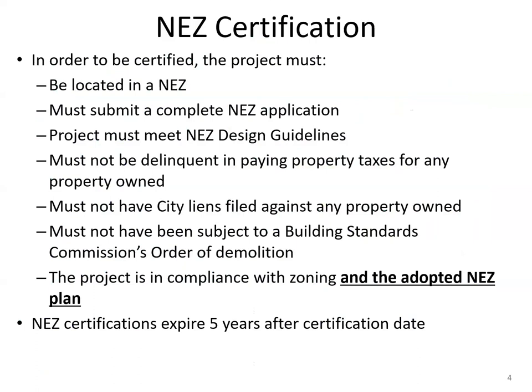The exception to the city liens rule is because one of the things we do is release liens. If you purchase a piece of property that you are going to be seeking NEZ certification on, and the person who sold it to you is responsible for city liens, as part of you creating a project and building a new home on that property, the city will release those liens. But you can't have liens on any other property you own. You cannot have been subject to a building standard commission order of demolition, and the project has to be in compliance with zoning and the adopted NEZ plan. Certifications expire five years after the certification date, so if you don't complete your project in five years, you have to resubmit for certification.